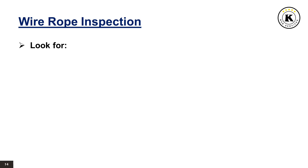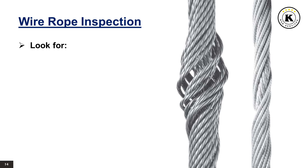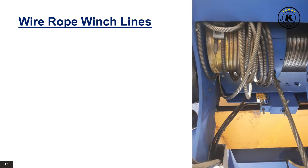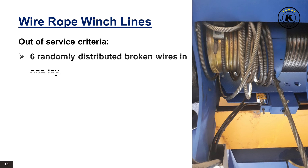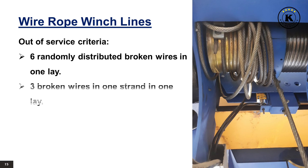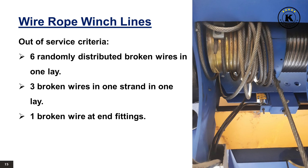Also look for core protrusion and main strand displacement. For wire rope winch lines, the out-of-service criteria includes 6 randomly distributed broken wires in 1 lay, or 3 broken wires in 1 strand in 1 lay, or 1 broken wire at end fittings.